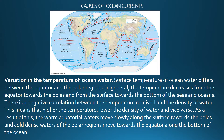There is a negative correlation between temperature and the density of water — higher the temperature, lower the density, and vice versa. As a result, the warm equatorial water moves slowly along the surface towards the poles, and the cold dense waters of the polar regions move towards the equator along the bottom of the ocean. As you can see in this map, the warmer equatorial water is less dense and moves along the surface towards the poles, while the colder polar water moves towards the equator along the ocean bottom.